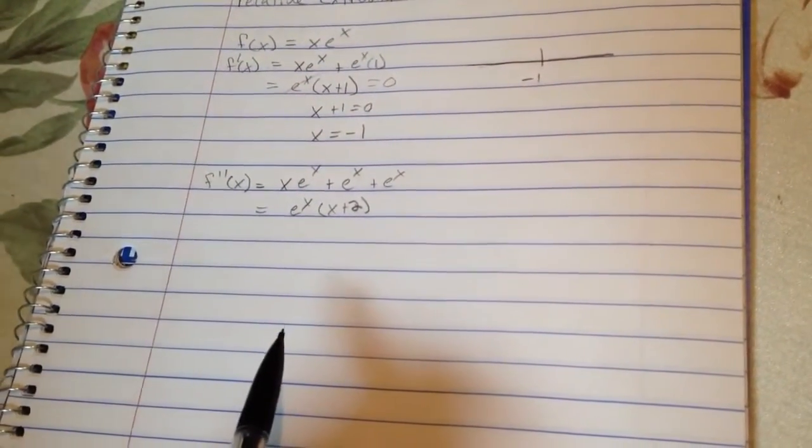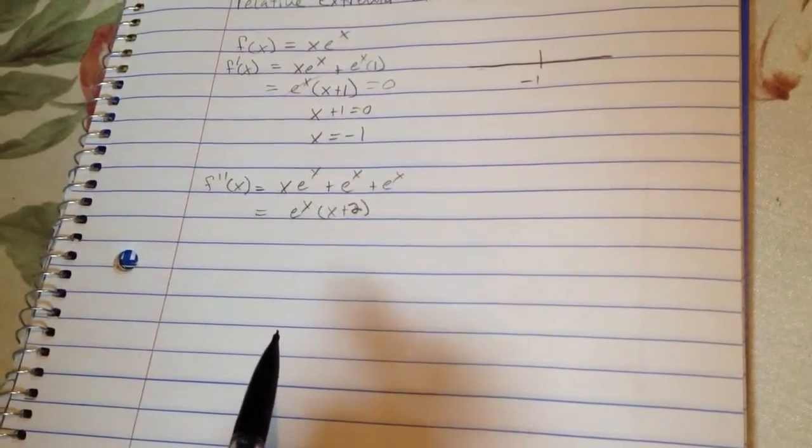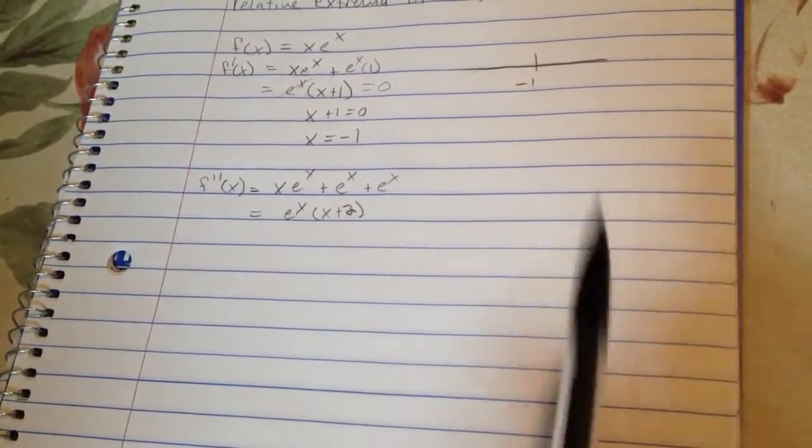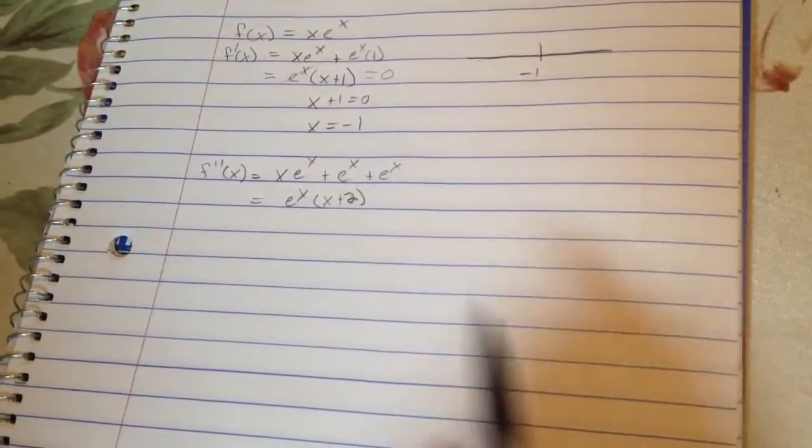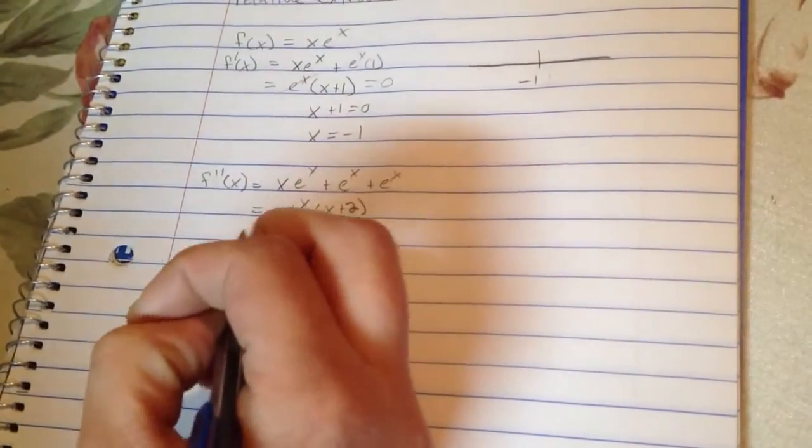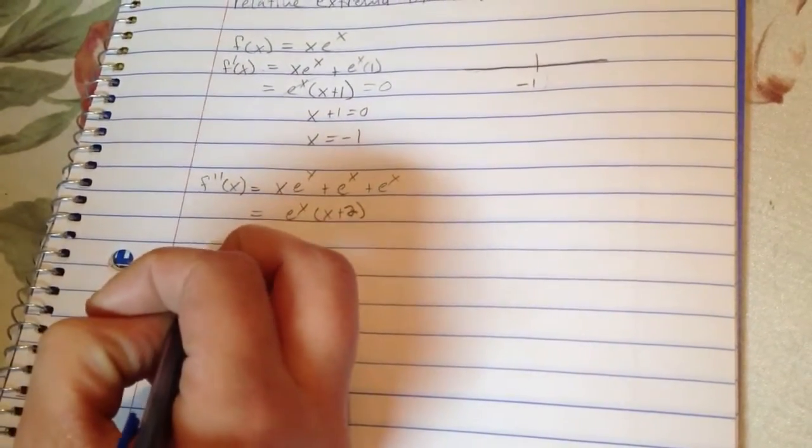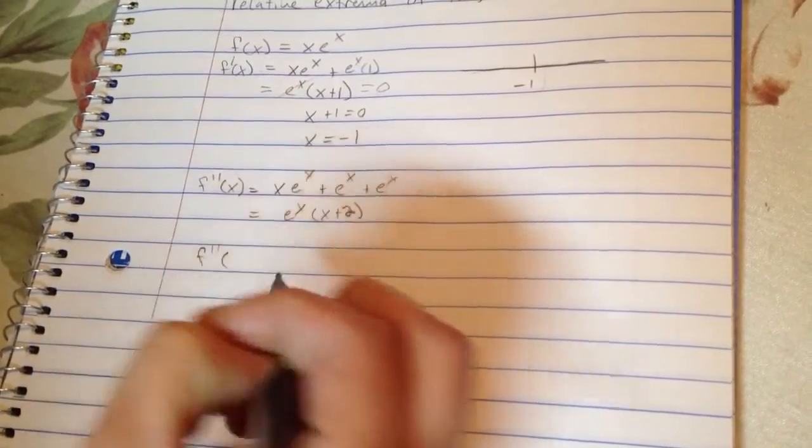And then in order to find out whether we have a relative max or min, we're literally just going to plug in our critical number straight into the second derivative there. And what this is going to tell us is what the concavity is.